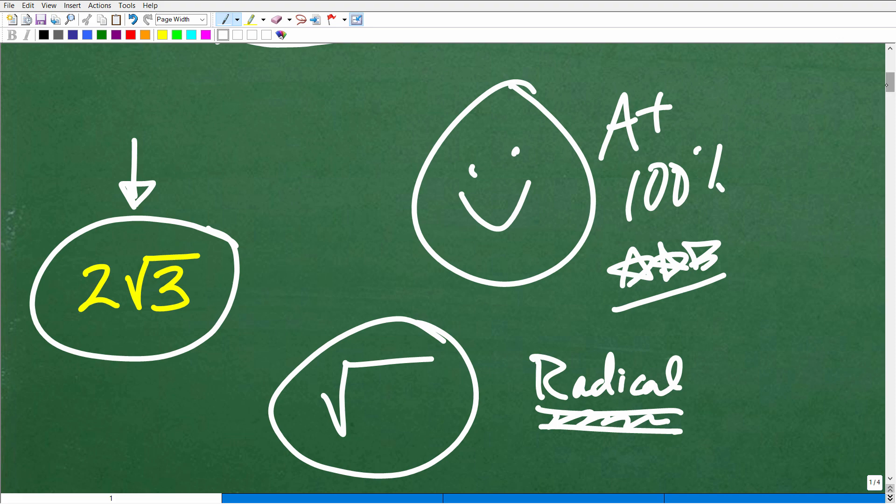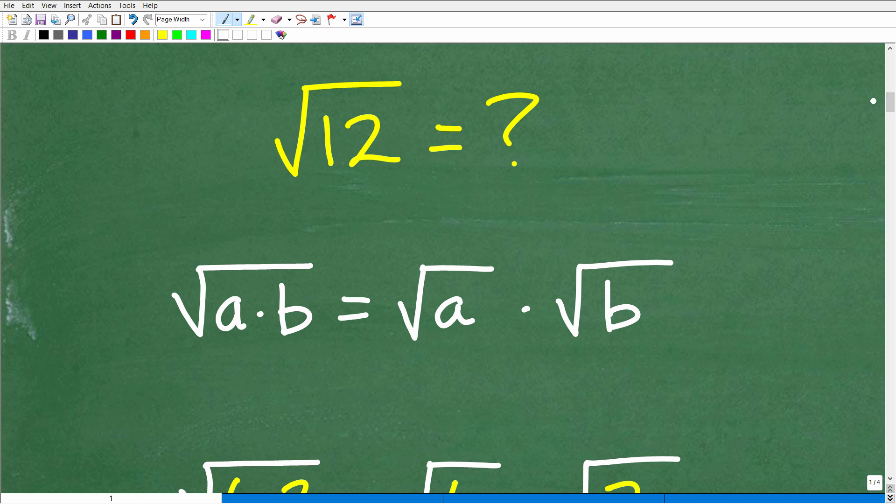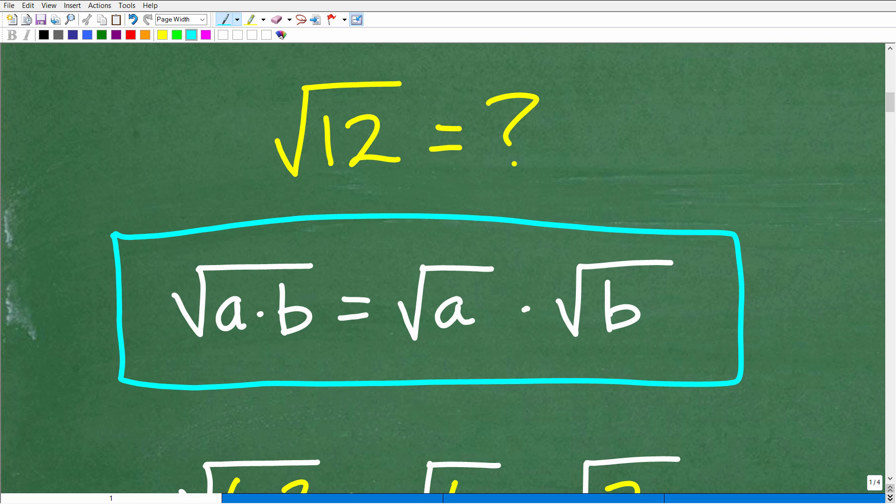All right, so let's go ahead and get into this problem now. So the square root of 12, what does that equal to? Well, the only way we can figure this problem out is to use a property of square roots or property of radicals. And this is the one that we're going to be using right here. So namely, what this is saying, you know, this kind of looks kind of fancy, but this is not that difficult. What this is saying is that the square root of a value, a number, okay, if we think of that number in terms of its factors, we can separate, we have one big square root.